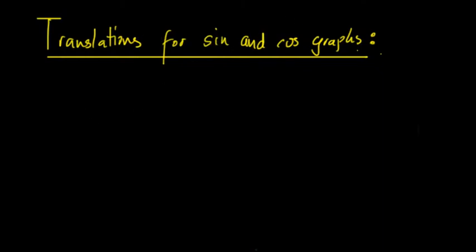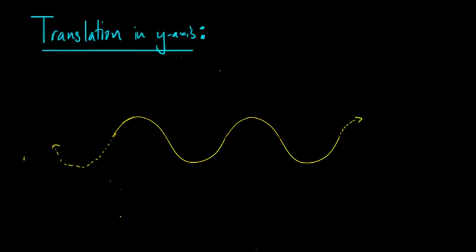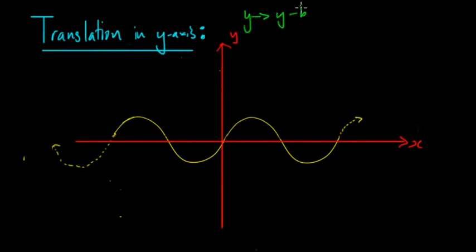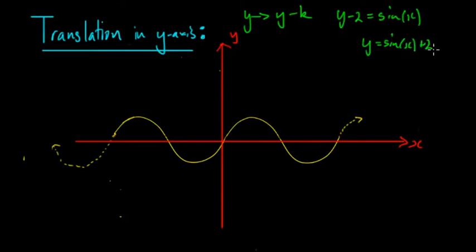We'll begin with translation in the y-axis, which is effectively moving the graph up or down. For translation in the y-axis, we replace y with y minus k. So if you want to move it up two units then k equals 2, which means we get y minus 2 equals sine x, therefore y equals sine x plus 2.